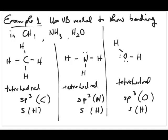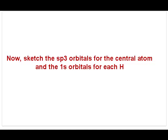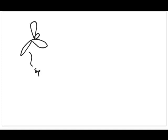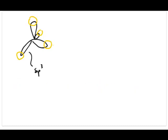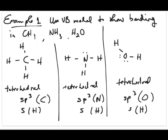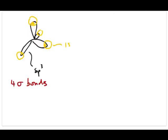Now that we know the orbitals, we draw the bonding sketch. For CH4, draw the central carbon in a tetrahedral arrangement using four SP3 orbitals — label them SP3. Each hydrogen comes in with a 1s orbital (shown in yellow), overlapping one SP3 lobe. To complete the answer, count sigma and pi bonds: since the Lewis structure shows only single bonds, CH4 has four sigma bonds and no pi bonds.